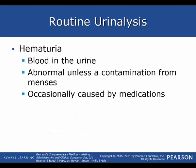Hematuria is a condition of having blood in the urine. This is abnormal unless contamination is found from a female during her menstrual cycle, and it is occasionally caused by different medications. When checking a patient and documenting their chief complaint, you can document hematuria, but you cannot diagnose them with a urinary tract infection. However, if blood is present on the reagent strip test, you can say that the patient has hematuria.